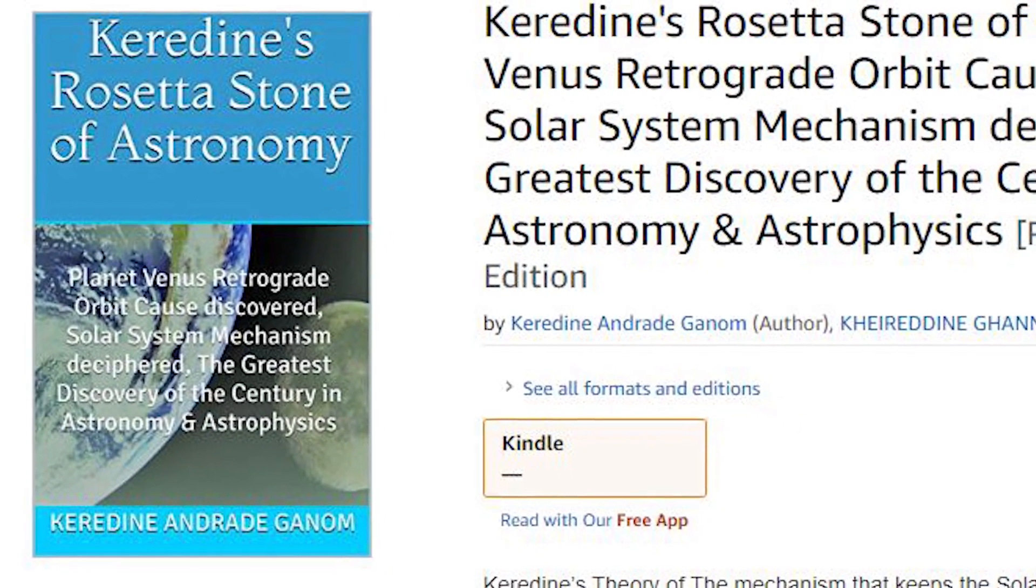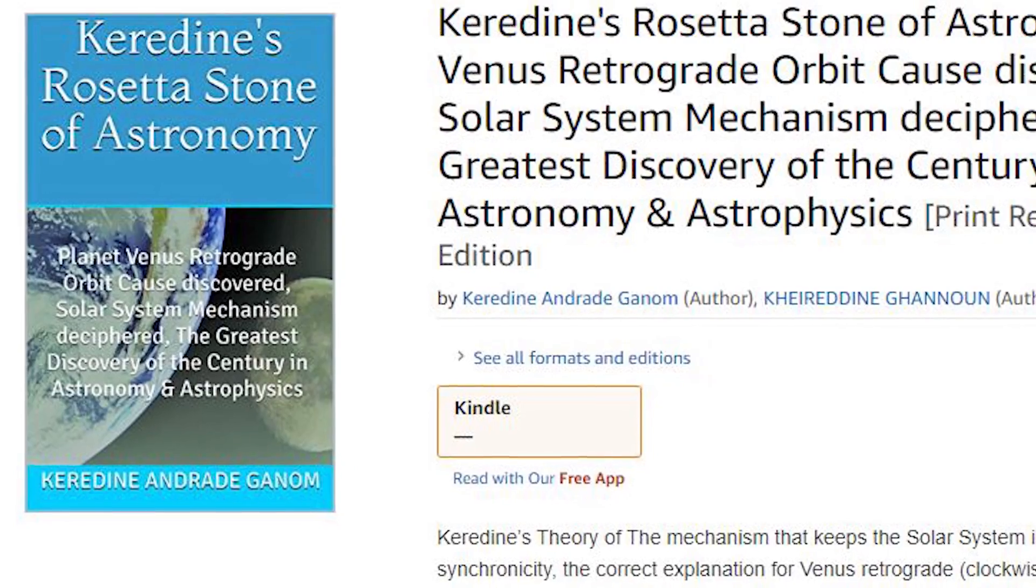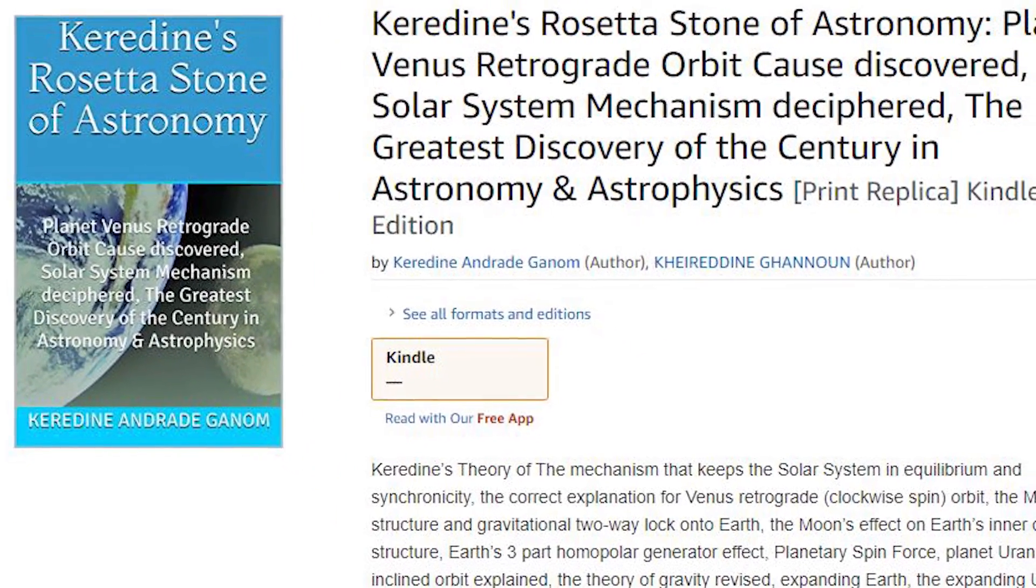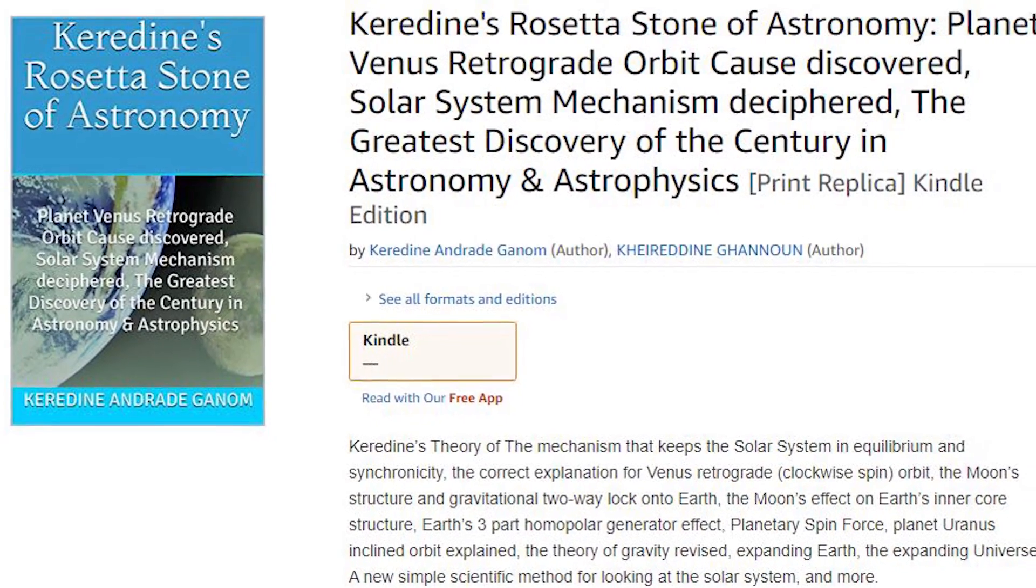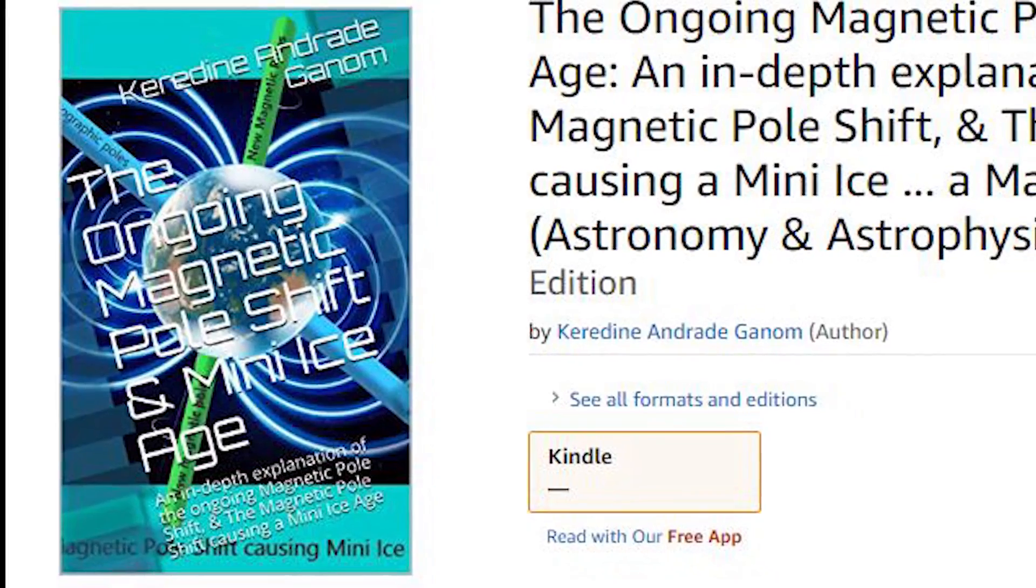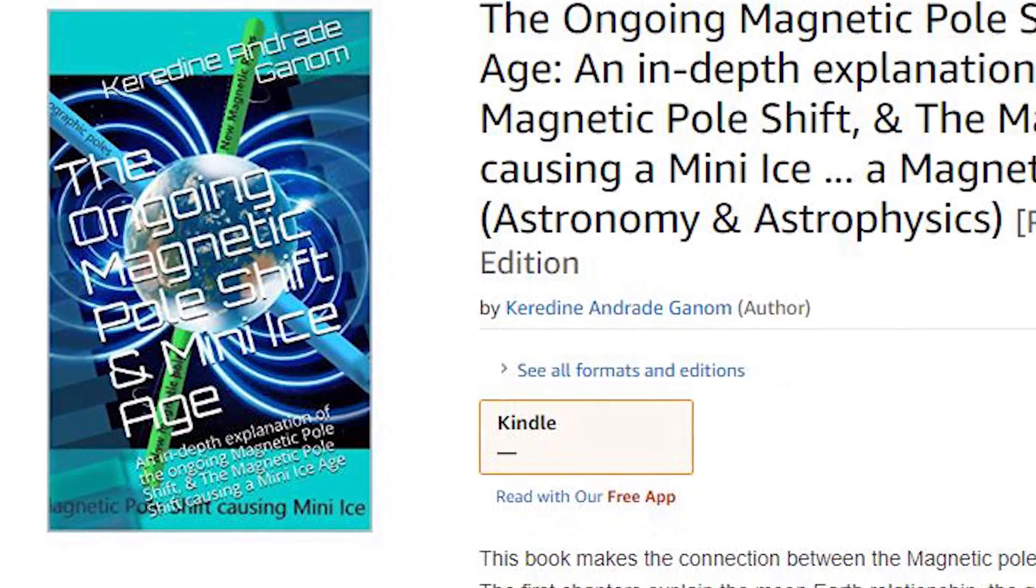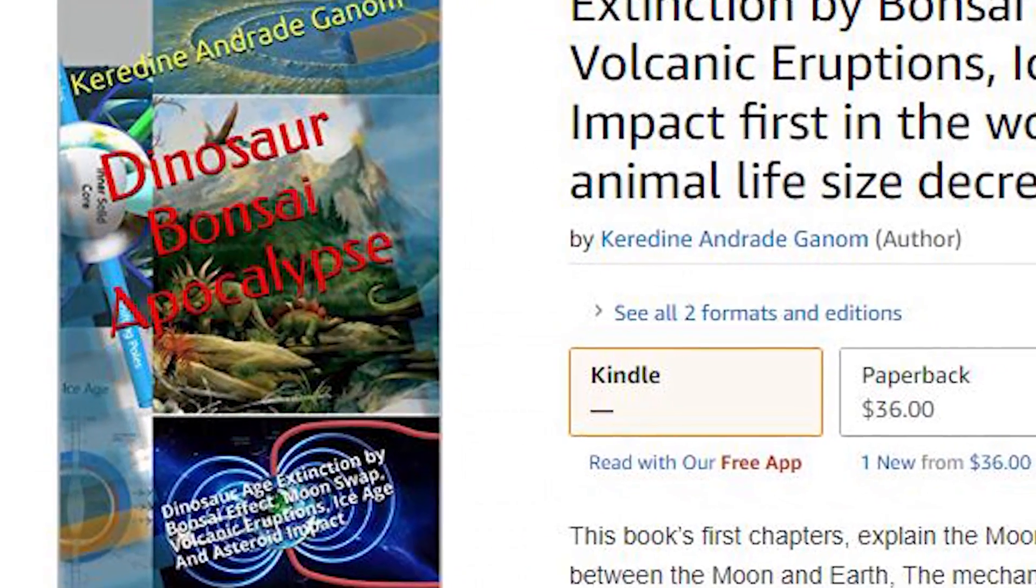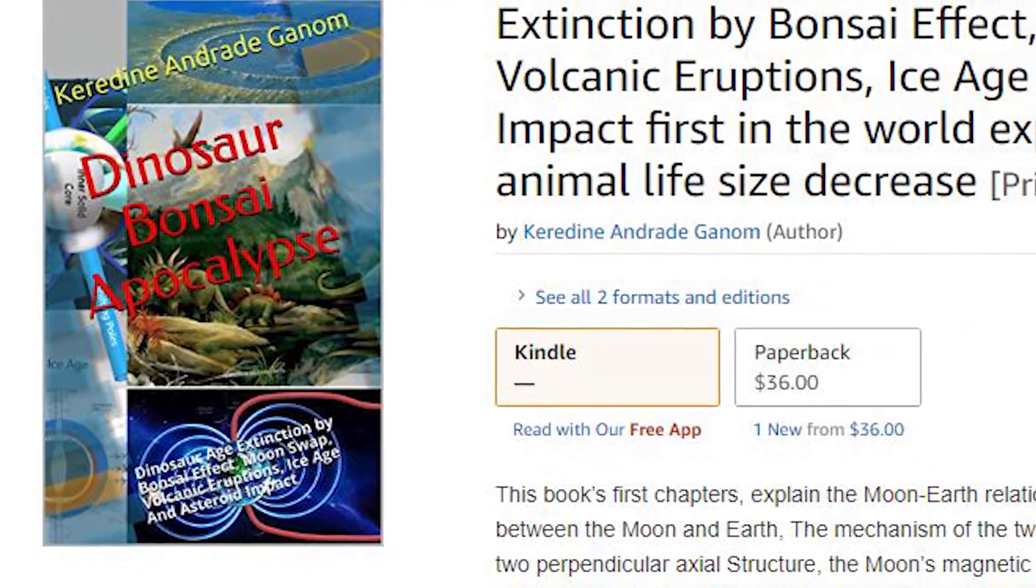This book is the first of a series of four books. This book explains the mechanism of the gravitational two-way grip between the Earth and its moon, with chapters and explanation on the Venus retrograde orbit. The second book explains the ongoing magnetic pole shift and possible mini-ice age. The third book includes new theories on the dinosaur extinction.